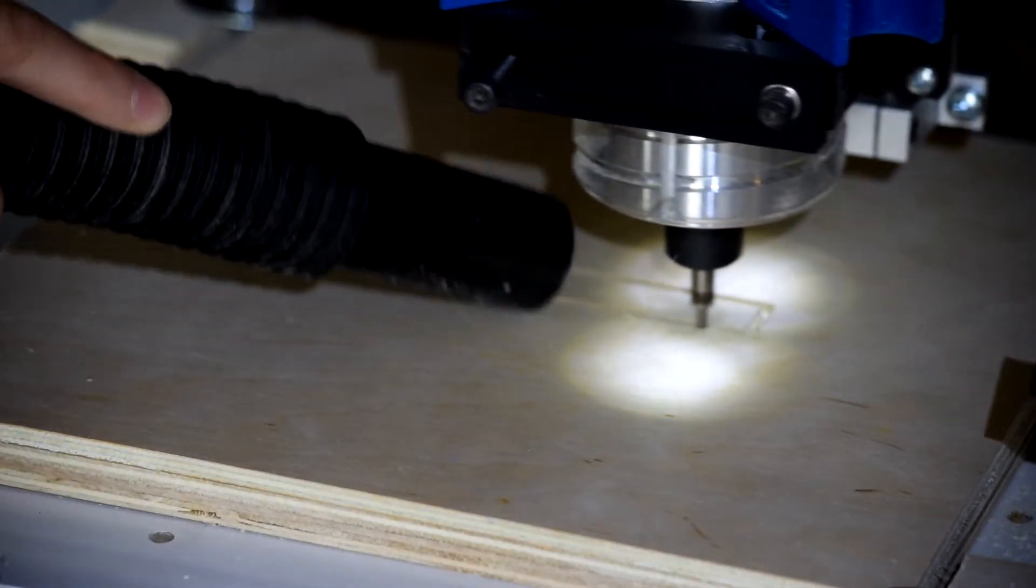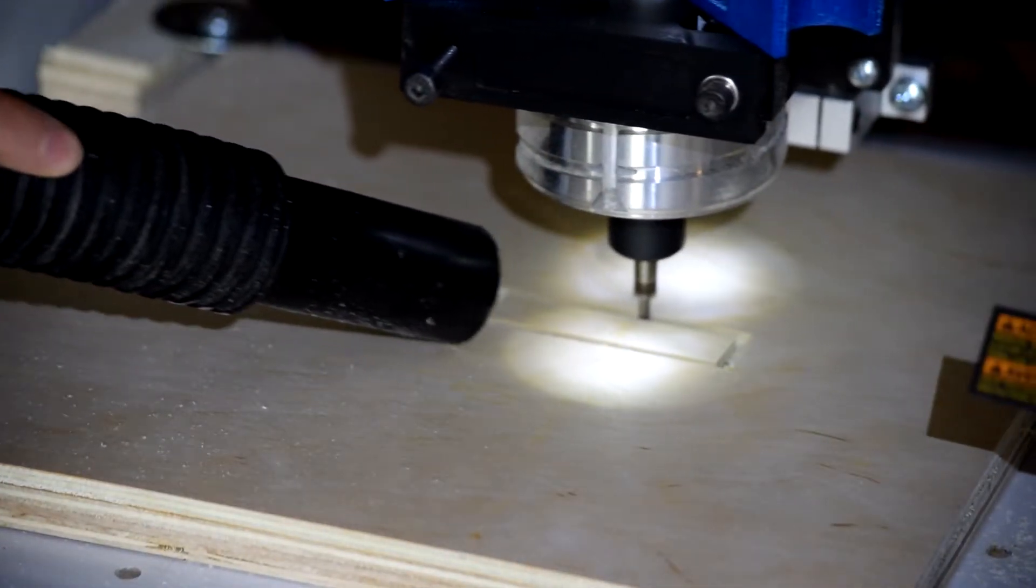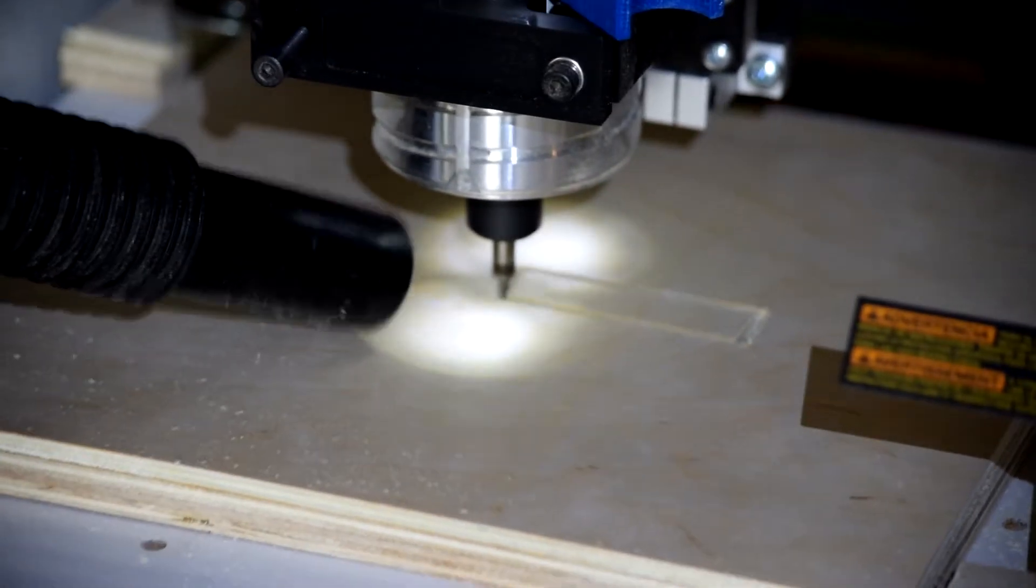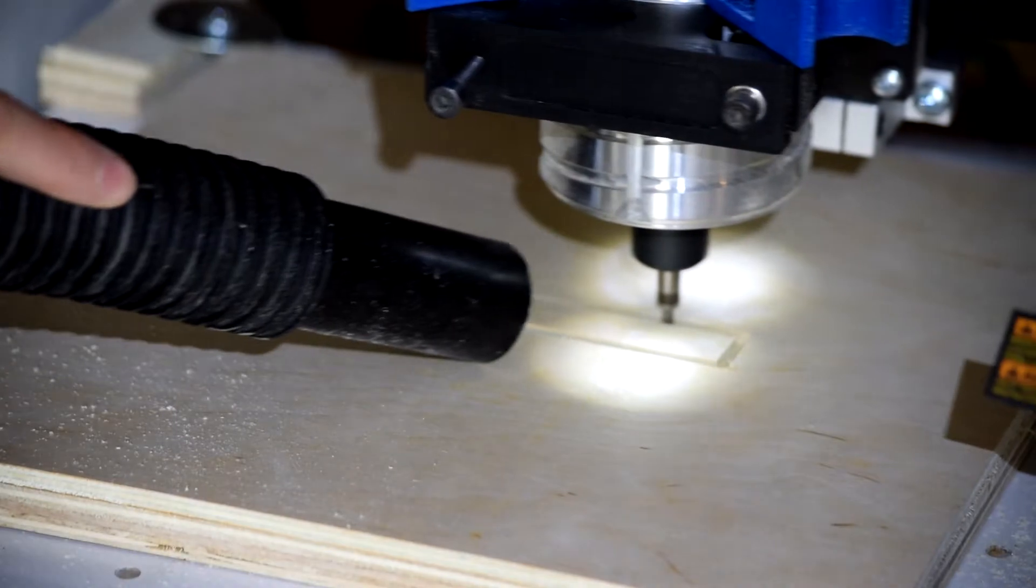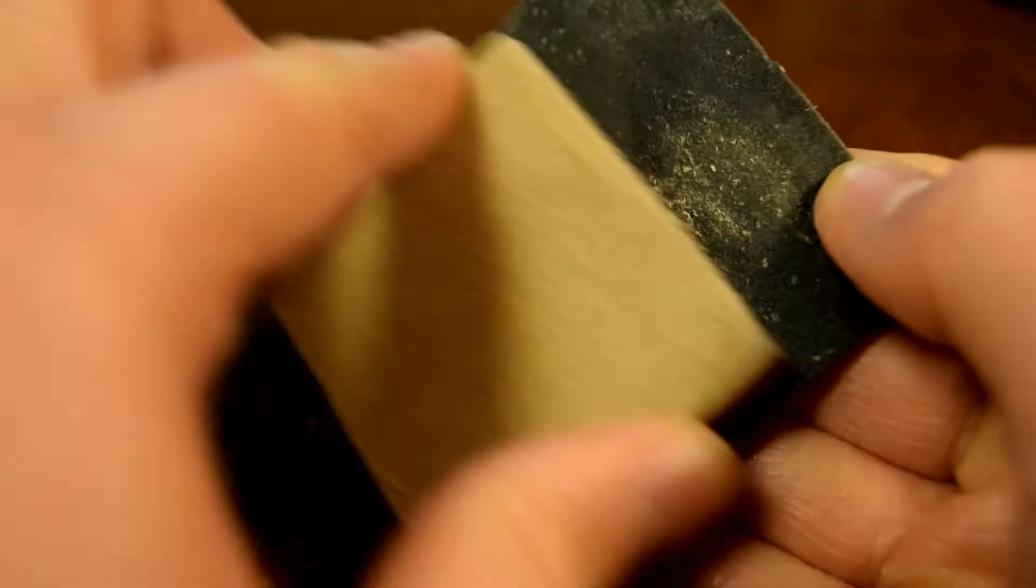Next, I put my material, a sheet of 10.5 inch by 10.5 inch by quarter inch plywood, on my Millwright CNC machine and began cutting out each part. I also sanded down each piece and gave the edges a good rounding to create a better aesthetic.